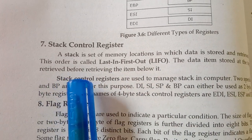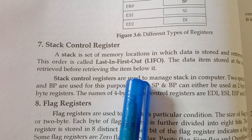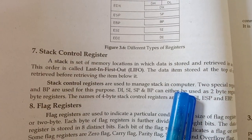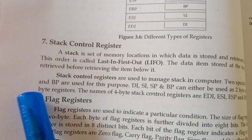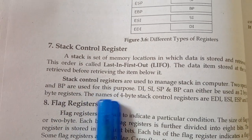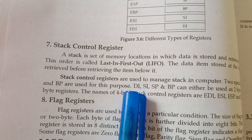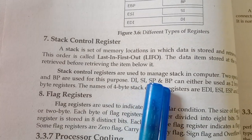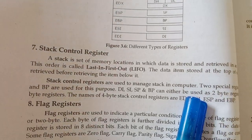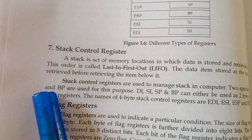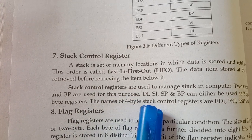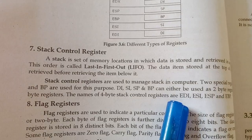Stack control registers are used to manage the stack in the computer. Two special registers, SP and BP, are used for this purpose. These are two-byte registers, and the four-byte stack control registers are named ESP and EBP.